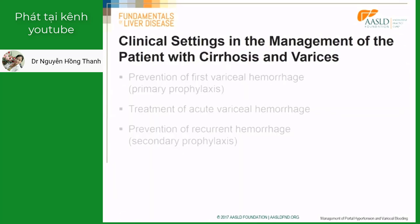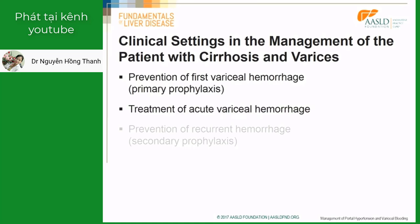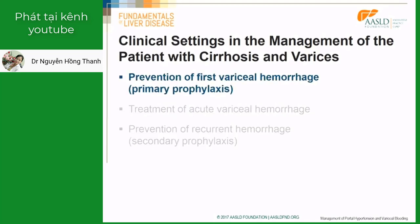So how do we use these therapies in clinical practice? We have three different clinical scenarios: the prevention of first variceal hemorrhage, which we call primary prophylaxis; the treatment of acute variceal hemorrhage; and the prevention of recurrent hemorrhage, or secondary prophylaxis. We will start with the prevention of first variceal bleeding.